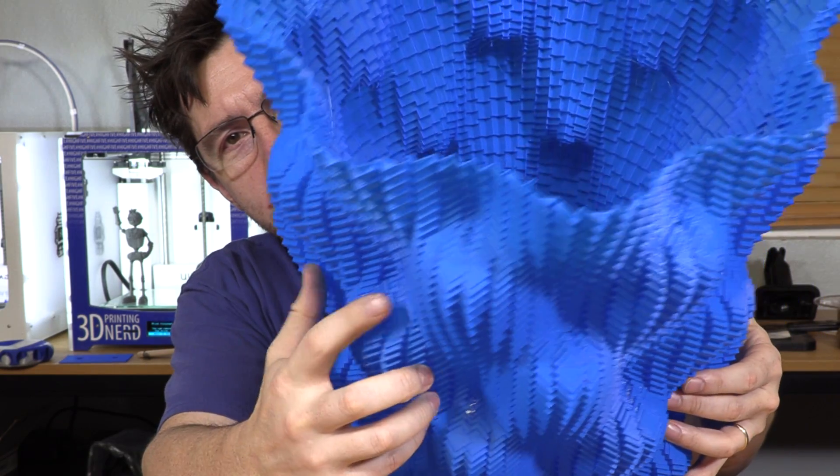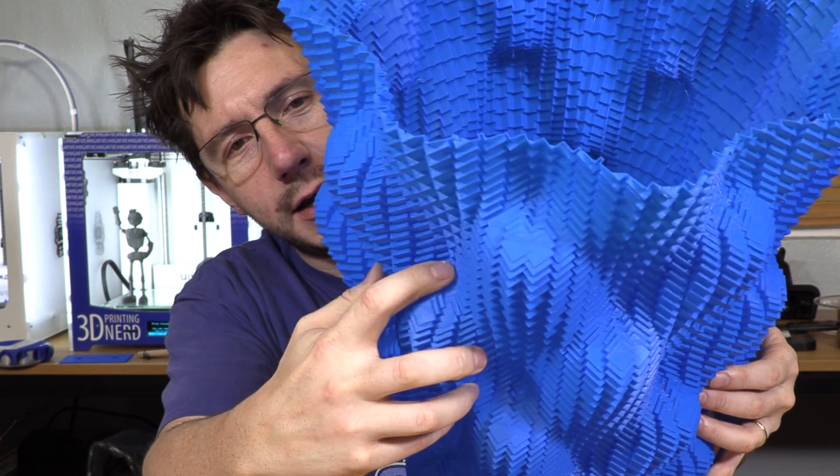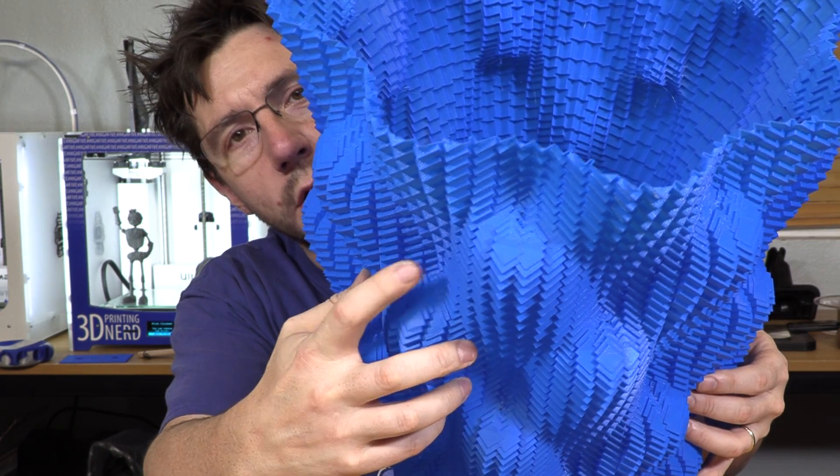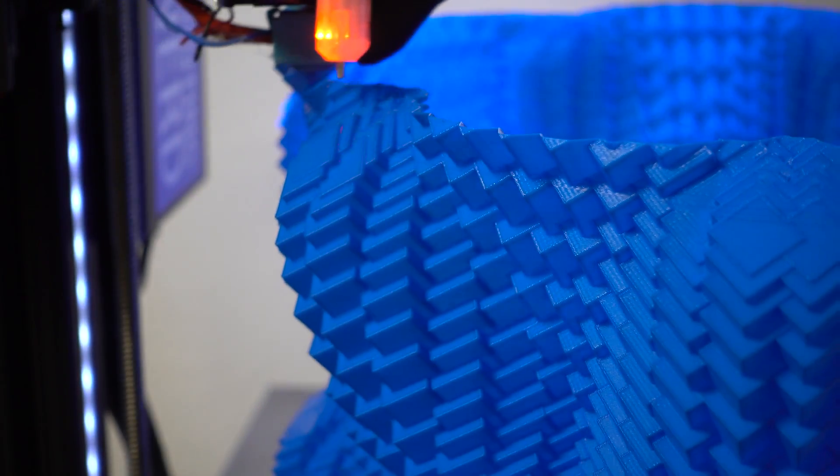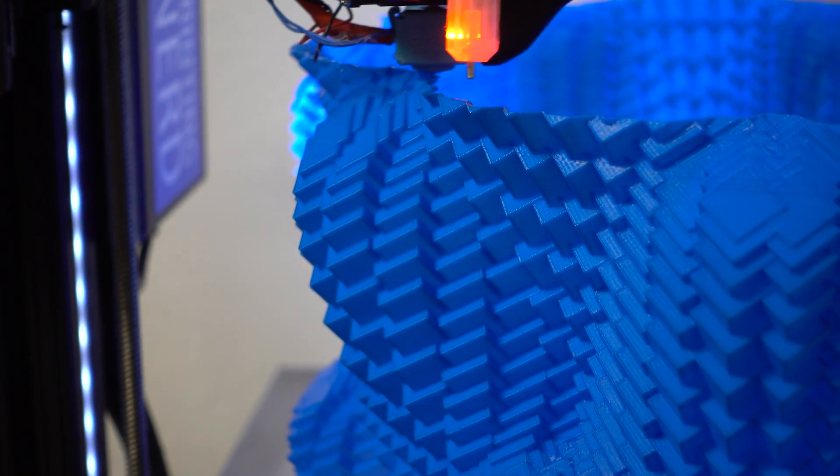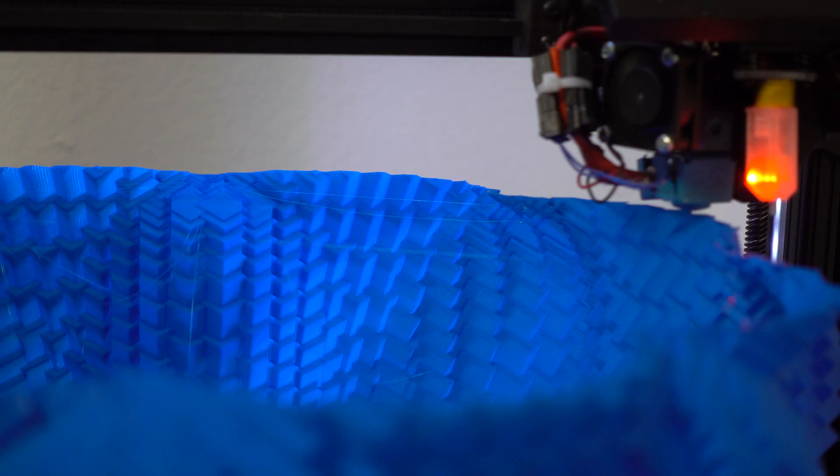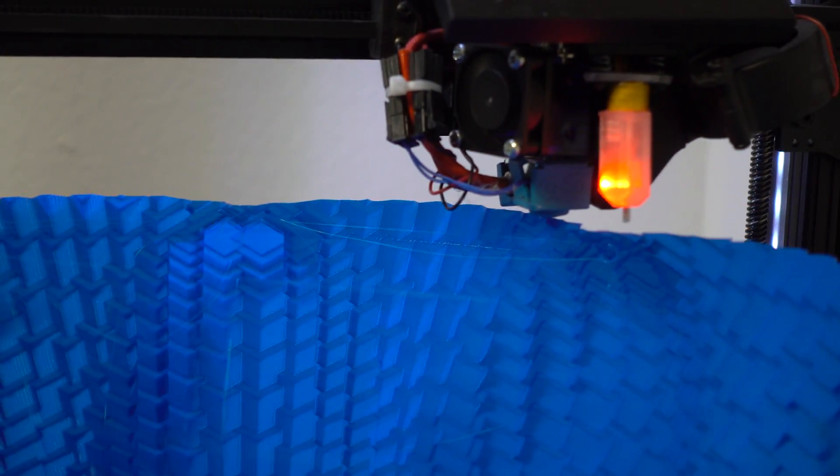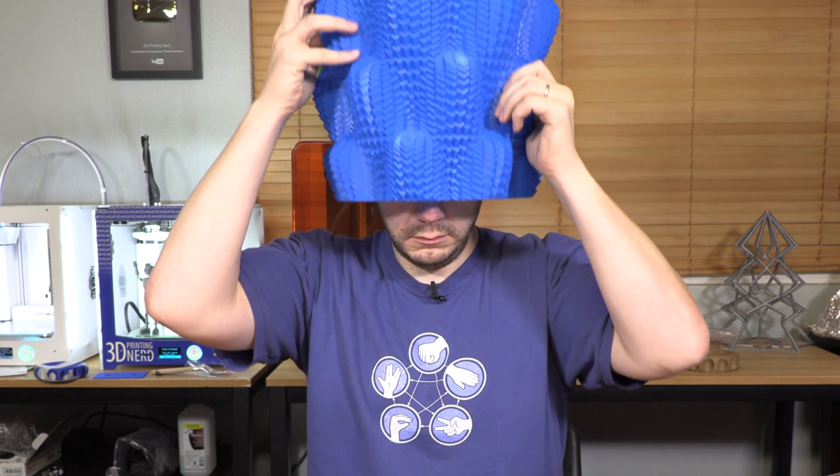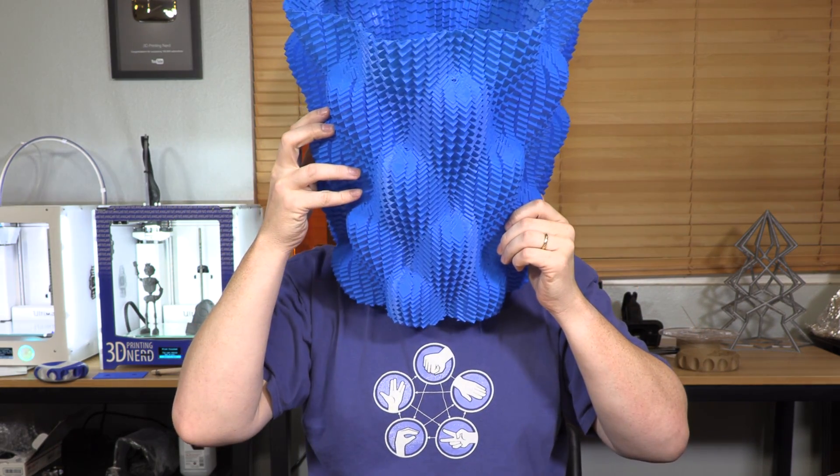You can kind of see in areas like right here where vase mode just doesn't work because there's too much horizontal space between the two layers and that's why it fails. But I mean, you can see through it. There's a little bit of fuzz in there, a little bit of fur. That's okay. It fits on my head.